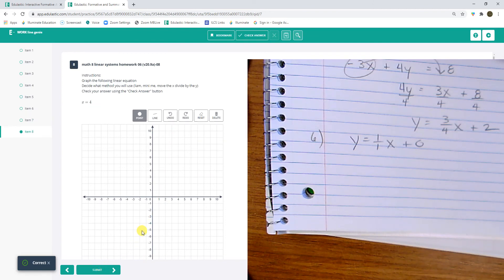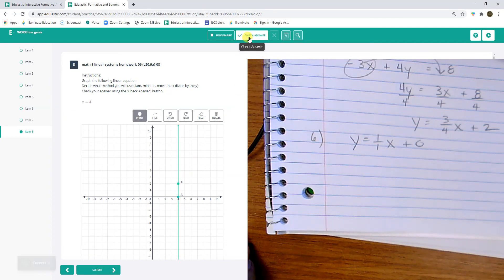Number 8 is x equals 4, which is just a vertical line at x equals... Oh. Reset. There we go. Check that answer. And we are good.